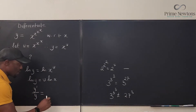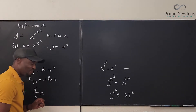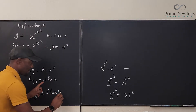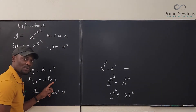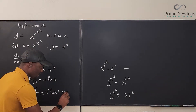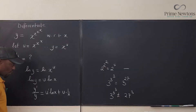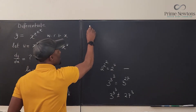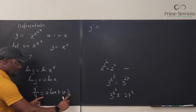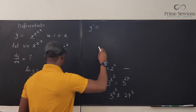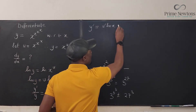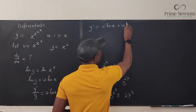Differentiating implicitly, I get y'/y equals — using the product rule on the right side — differentiate the first (u') and keep the second (ln x), plus keep the first (u) and differentiate the second (which gives 1/x). So y'/y = u' ln x + u · (1/x).